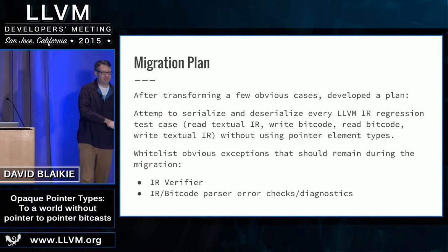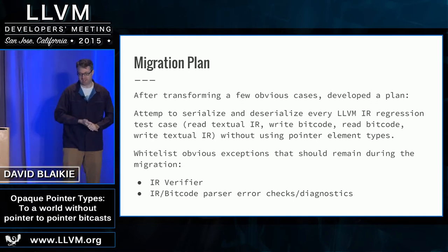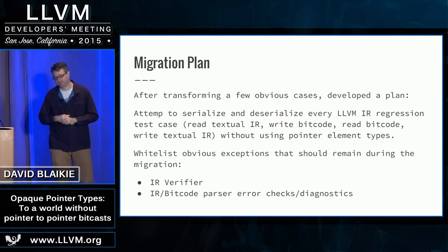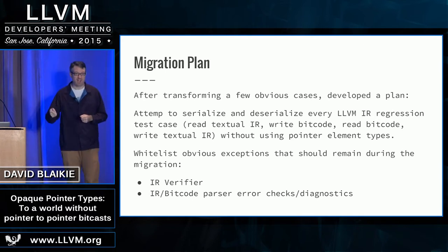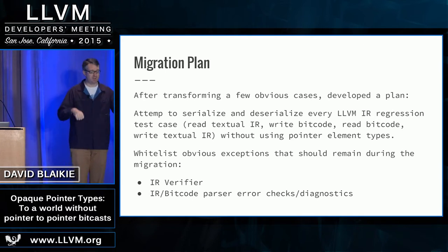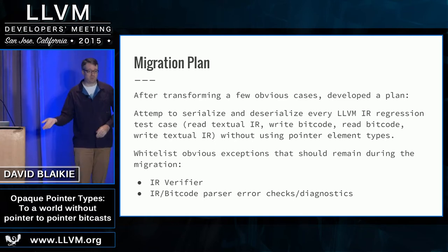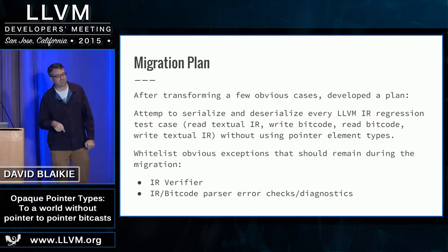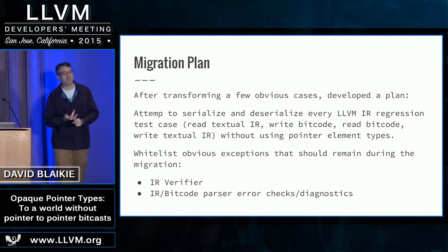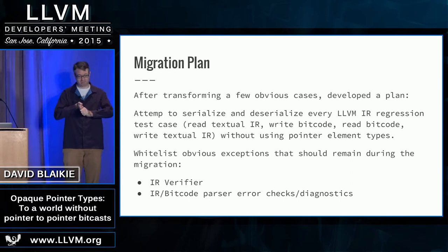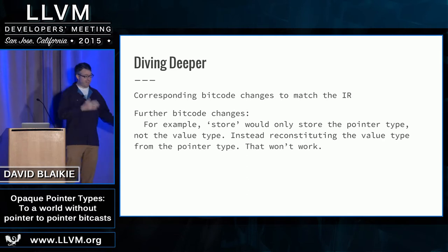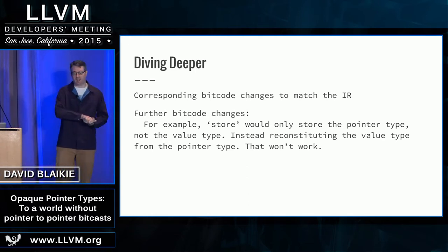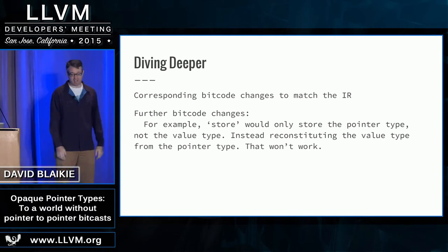After I started with the easy things, I started to find a little bit of a habit. I decided to focus on all of the IR changes I might need. I did that by essentially asserting that the pointer type was never accessed, and then running a simple script that would serialize and deserialize every LLVM IR test case. So that tests IR writing, IR reading, bitcode writing, and bitcode reading. Once I had that as a principle I was driving towards, I found the next sets of things I needed to transform.